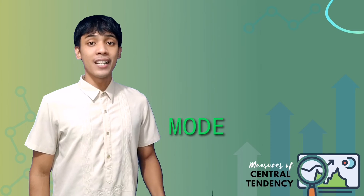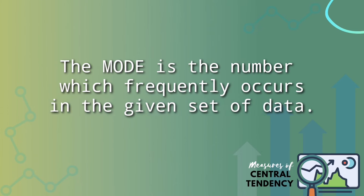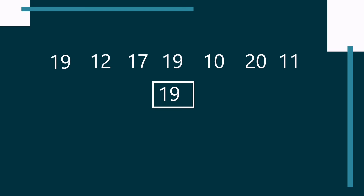The third measure of central tendency is the mode. It is the simplest measure of central tendency. Finding the mode does not require computation — you simply look for the number which appears the most number of times in the dataset. For example, let us consider the following numbers: 19, 12, 17, 19, 10, 20, and 11. The mode is 19, since 19 appears twice in the set of data.